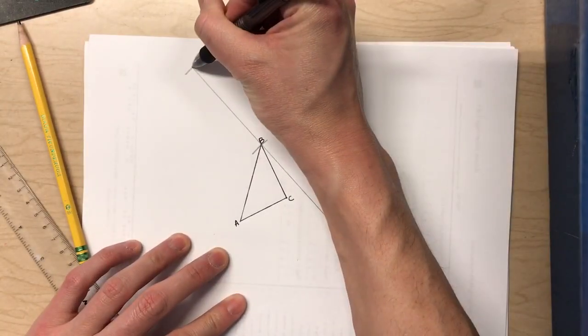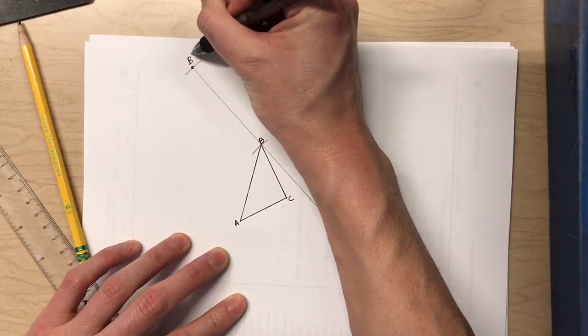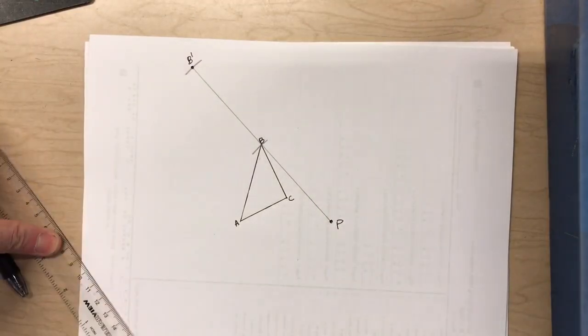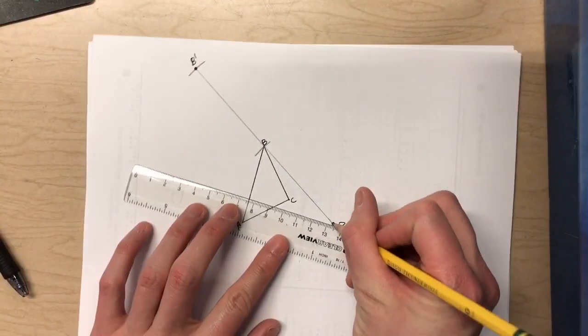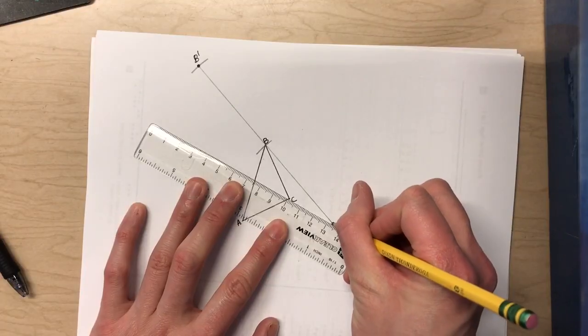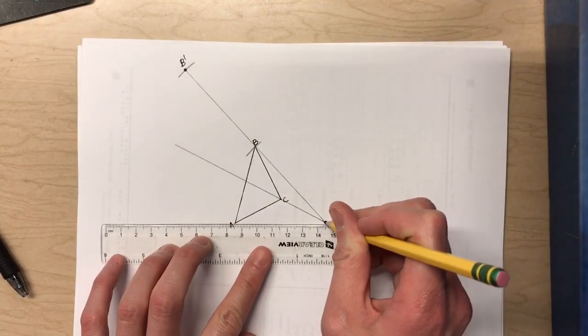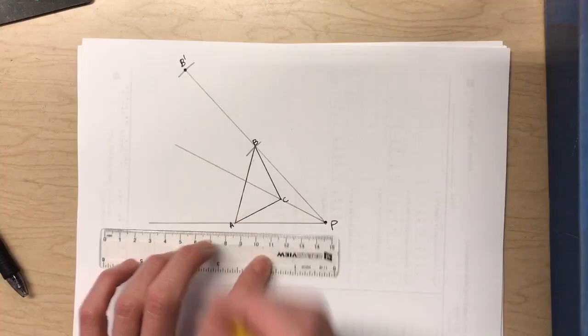So that is my B prime, and continue that for each of the other vertices of your triangle and you'll have the dilated image.